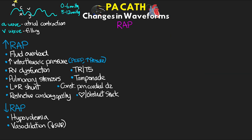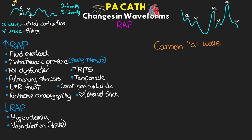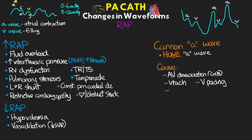A variation on this is what's referred to as a cannon A-wave, where the A-wave is absolutely huge. The cause is AV dissociation — think complete heart block, V-tach, V-pacing, and in some cases tricuspid stenosis. The atria is basically contracting when the tricuspid valve is closed or in bad cases of tricuspid stenosis where it's so stenosed that flow is very difficult, leading to these massive A-waves.